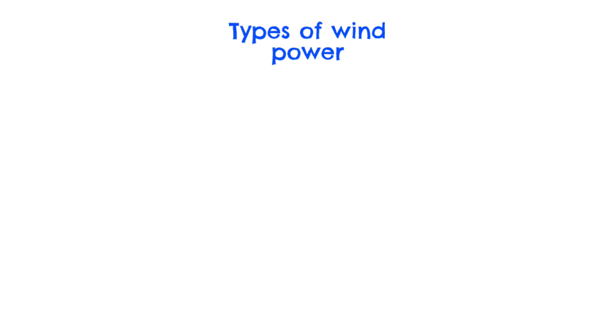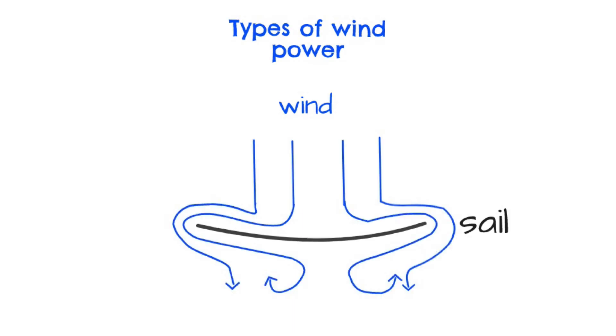There are actually two types of wind power. To understand the first form of wind power, consider a sail with the wind blowing directly towards it. The wind hits the sail, presses against it, and flows around it.